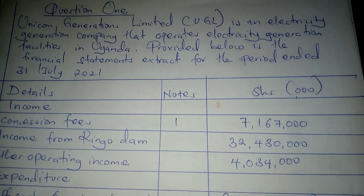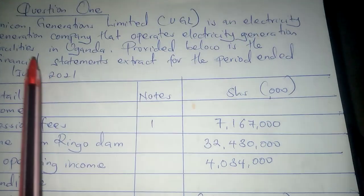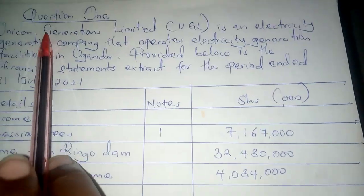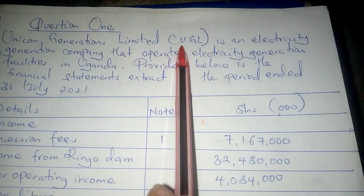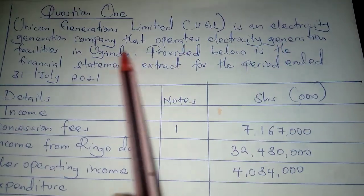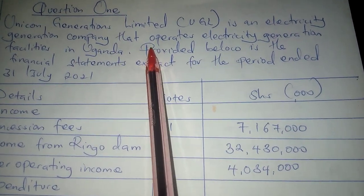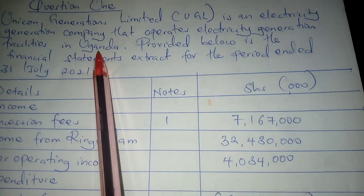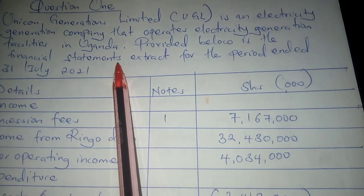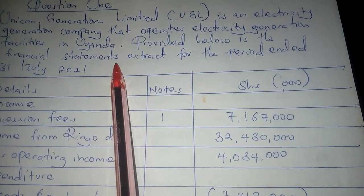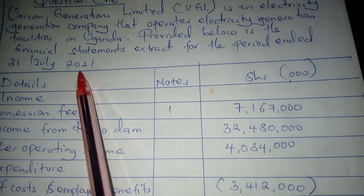Let's have an example on business income. The question says: Unicorn Generations Limited, which is UGL, is an electricity generation company that operates electricity generation facilities in Uganda. Provided below is the financial statements extract for the period ended 31st July 2021.